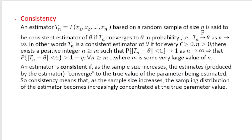Now let's talk about consistency. First I will give you a very rigorous mathematical definition and possibly it will sound very complicated, but when you watch the video till the very end, I will be able to explain it in simple terms also. So just make sure that you watch it till the very end. An estimator Tn based on a random sample of size n is said to be a consistent estimator of theta if Tn converges to theta in probability.